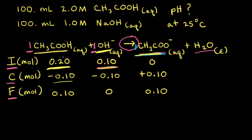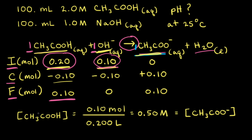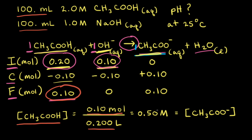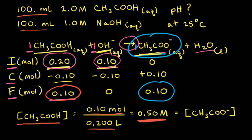In this case, we started with more weak acid than strong base, so we ended up with acid in excess. The next step is to calculate the concentrations. We have 0.10 moles of acetic acid. The total volume after mixing the two 100 mL solutions is 200 milliliters, or 0.200 liters. So 0.10 divided by 0.200 gives a concentration of 0.50 molar for acetic acid. For the acetate anion, we also have 0.10 moles over 0.200 liters, giving 0.50 molar.